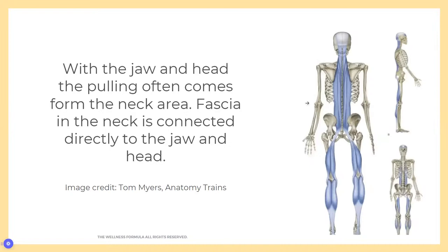This other image from Tom Myers' book shows the superficial back line. The fascia from the head connects all the way over and down to the back of the neck. If we have restrictions in the back of the neck — which many of us do — this can actually create a pulling all the way over the head, which can lead to quite major headaches, either one-sided or on both sides.